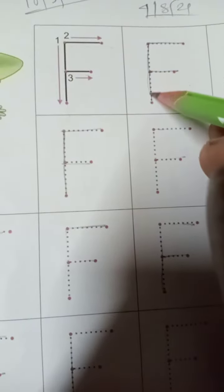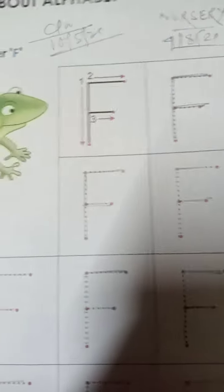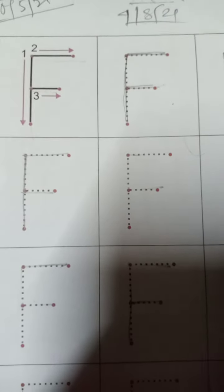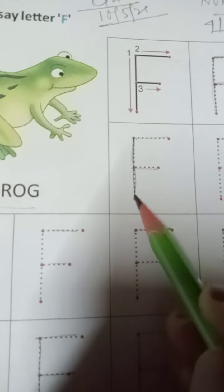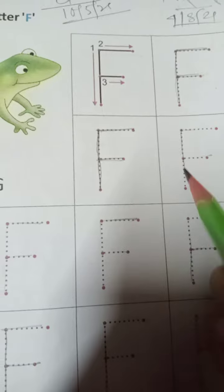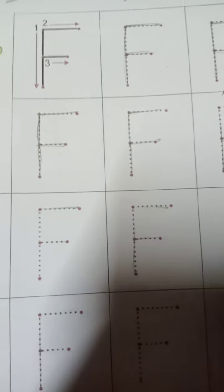Okay, like this — F. Capital letter F. Standing line, sleeping line — F. F is for frog. Now here also: standing line, sleeping line — F. F is for frog.